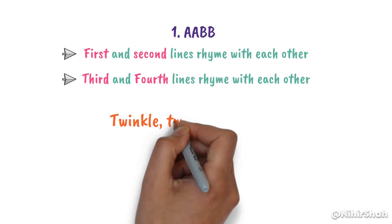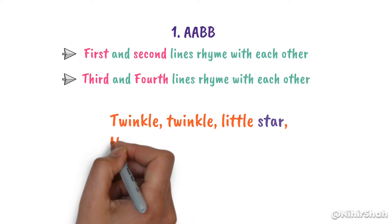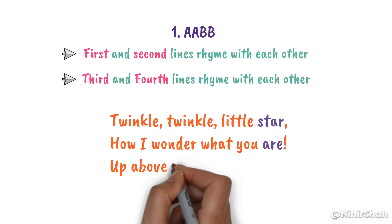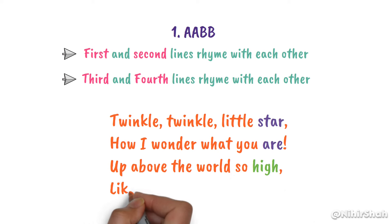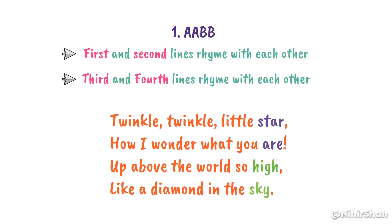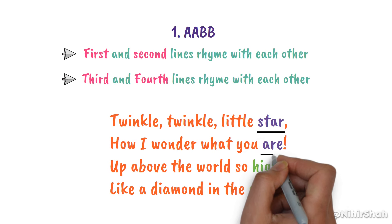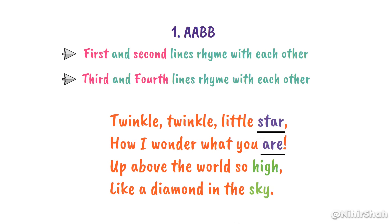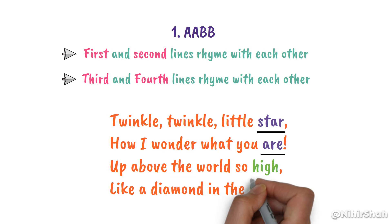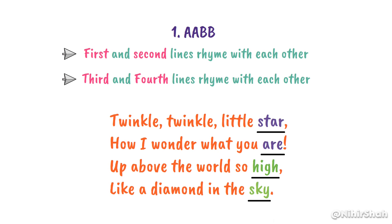For example, in the poem Twinkle Twinkle Little Star, 'star' rhymes with 'are', so line 1 and line 2 are rhyming. And 'high' rhymes with 'sky', so line 3 and line 4 are rhyming. So the pattern becomes A-A-B-B.